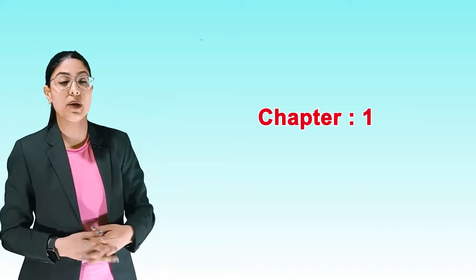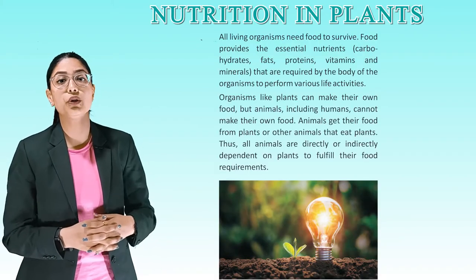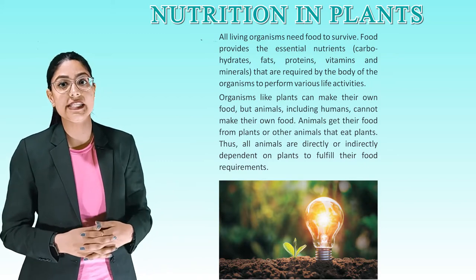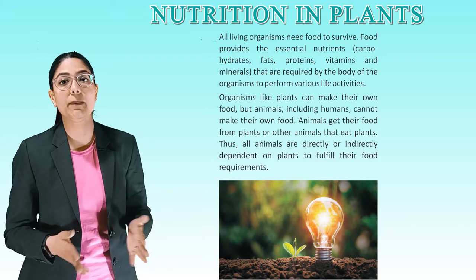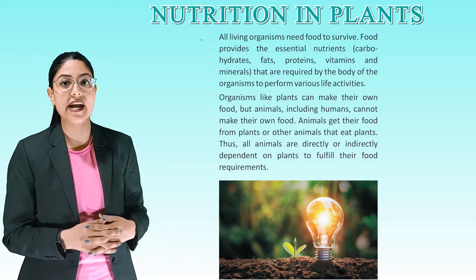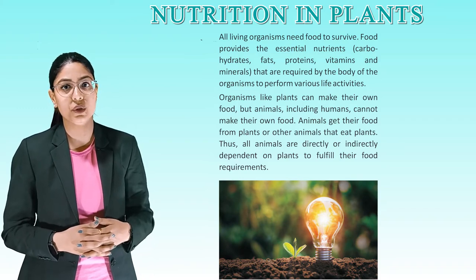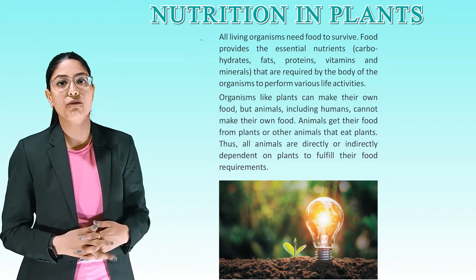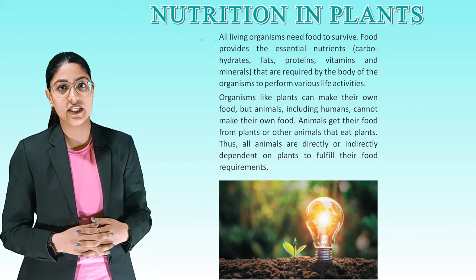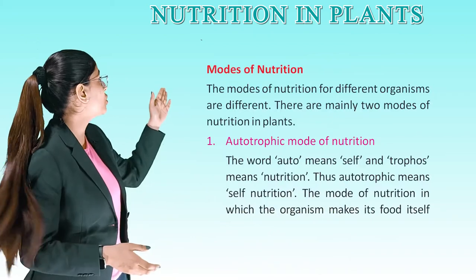Let's start with chapter number 1, Nutrition in Plants. All living organisms need food to survive. Food provides the essential nutrients — carbohydrates, fats, proteins, vitamins, and minerals — required by the body to perform various life activities. Organisms like plants can make their own food, but animals including humans cannot. Animals get their food from plants or other animals that eat plants. Thus, all animals are directly or indirectly dependent on plants to fulfill their food requirements.